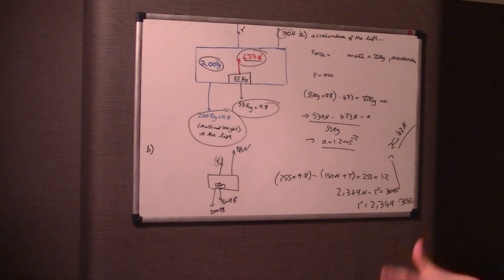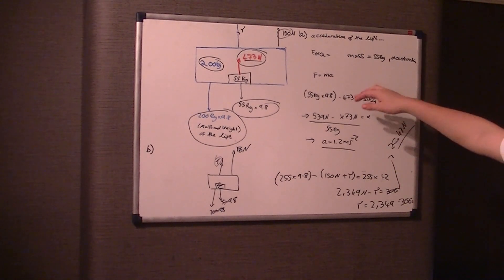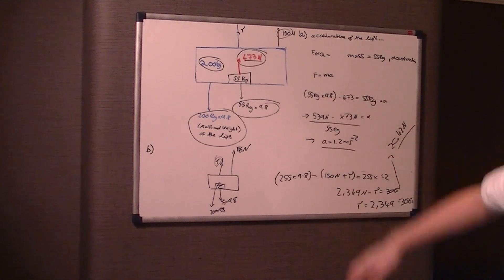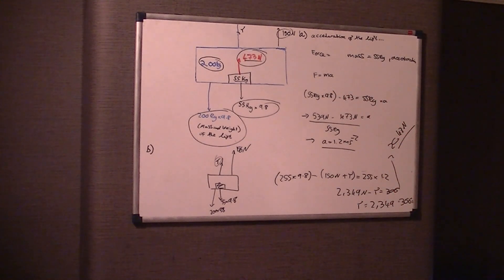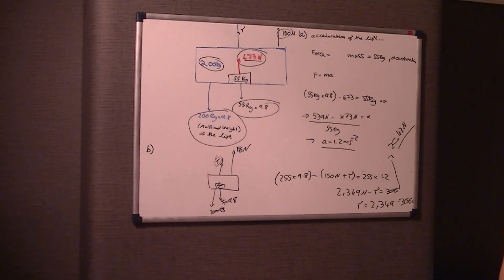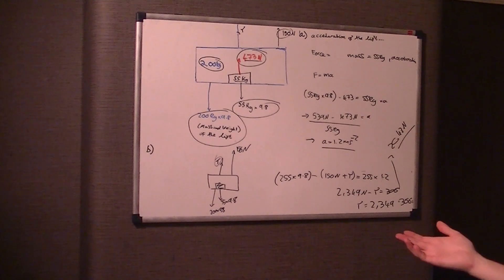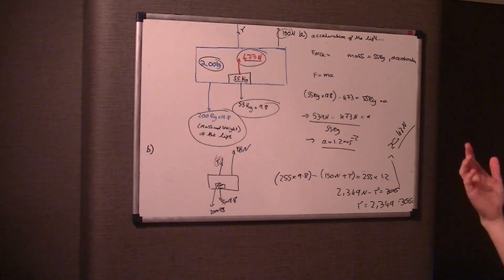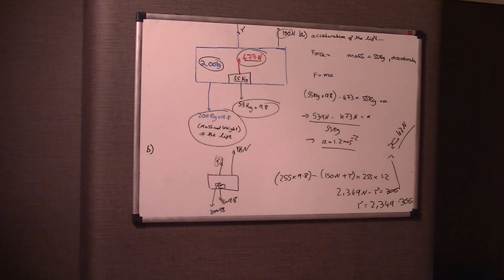Part A generally leads to part B — they wouldn't have randomly asked you to work out the acceleration without using it in some other form. The magnitude of the force is clearly some kind of resultant force, and since we just worked out the acceleration, you should have thought F = ma to work out T.